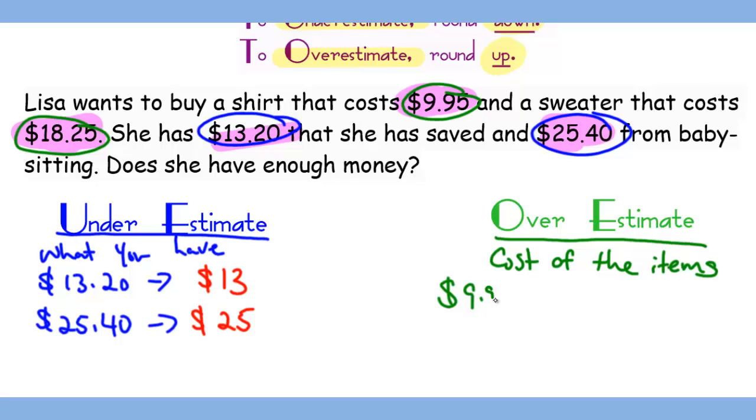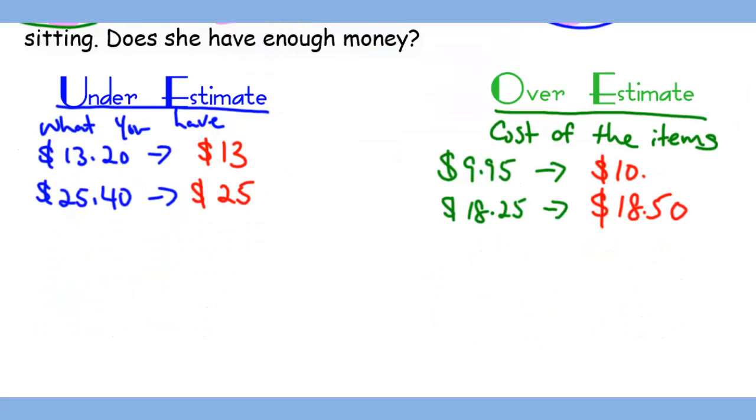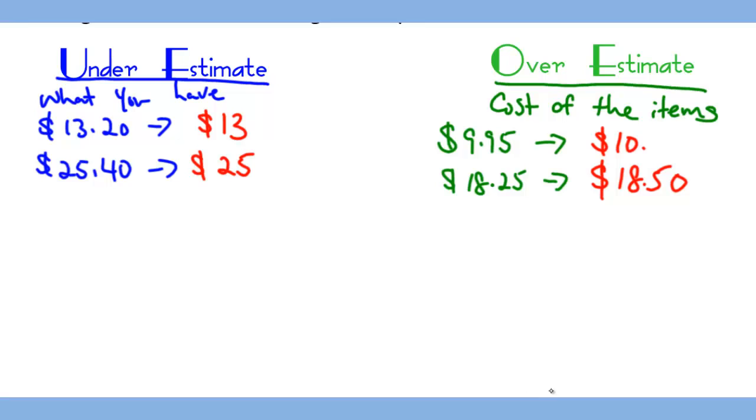The $9.95 will be overestimated, meaning rounding up to a whole dollar, so $10. And the $18.25, if you're comfortable, you can keep it as this because the 25 cents is a benchmark. If not, you can round to $18.50 or even $19.